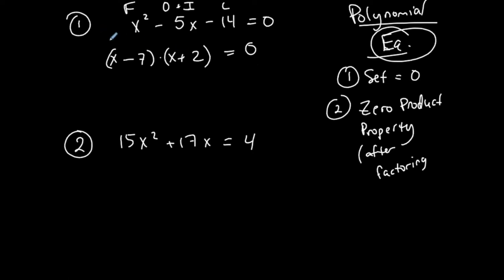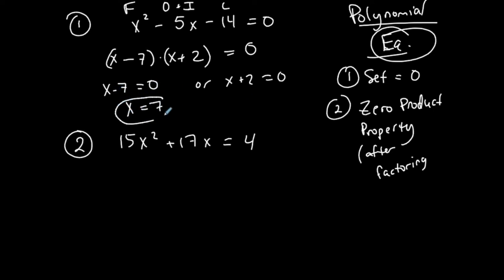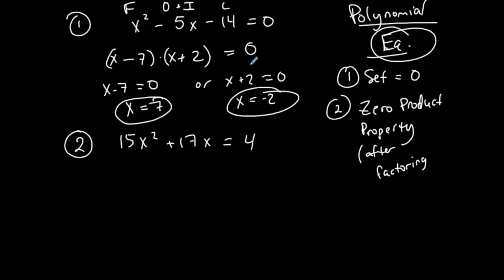Because this product is equal to zero, either the first portion can be zero or the second portion can be zero. You solve these little basic equations: add 7 to both sides so x equals 7, or subtract 2 from both sides so x equals negative 2. Two cases, two answers — it's a second-degree polynomial. These are my solutions, the values of x that make this statement true. I'm not simply factoring; I am solving an equation. That is the difference between just an expression in factored form versus solving an actual equation.